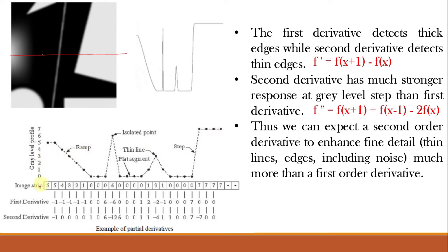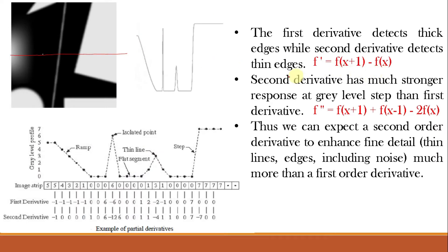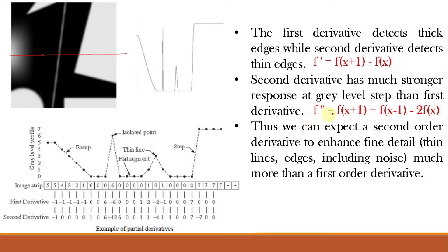The first derivative δf/δx = f(x+1) − f(x). For the second derivative in one dimension: δ²f/δx² = f(x+1) + f(x−1) − 2f(x). Let us apply these equations with numerical values. For the first derivative, consider f(x) = 5: f(x+1) = 4, so 4 − 5 = −1. For f(x) = 6: f(x+1) = 0, so 0 − 6 = −6. For f(x) = 3: f(x+1) = 1, so 1 − 3 = −2. For f(x) = 7: f(x+1) = 7, so 7 − 7 = 0.